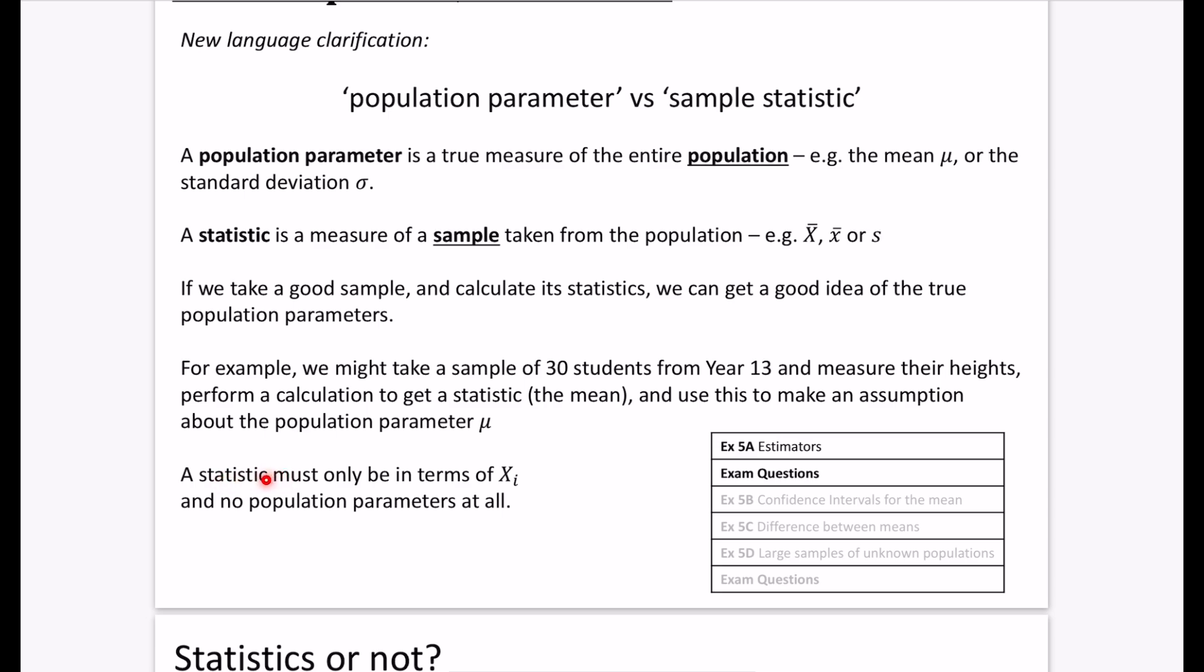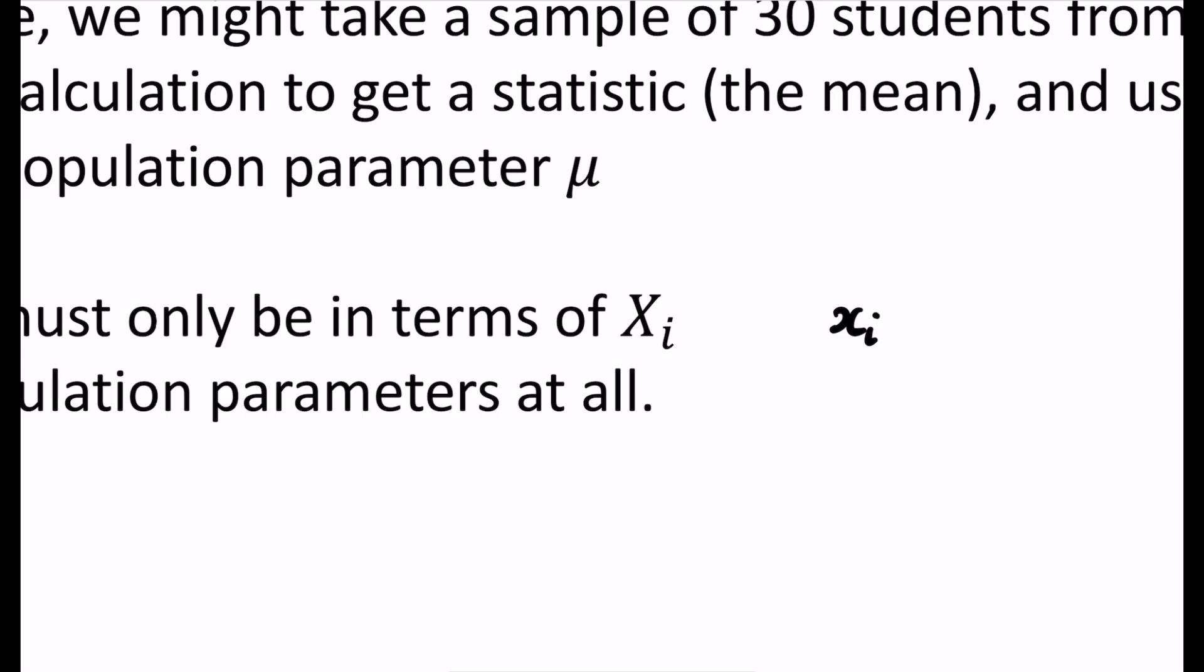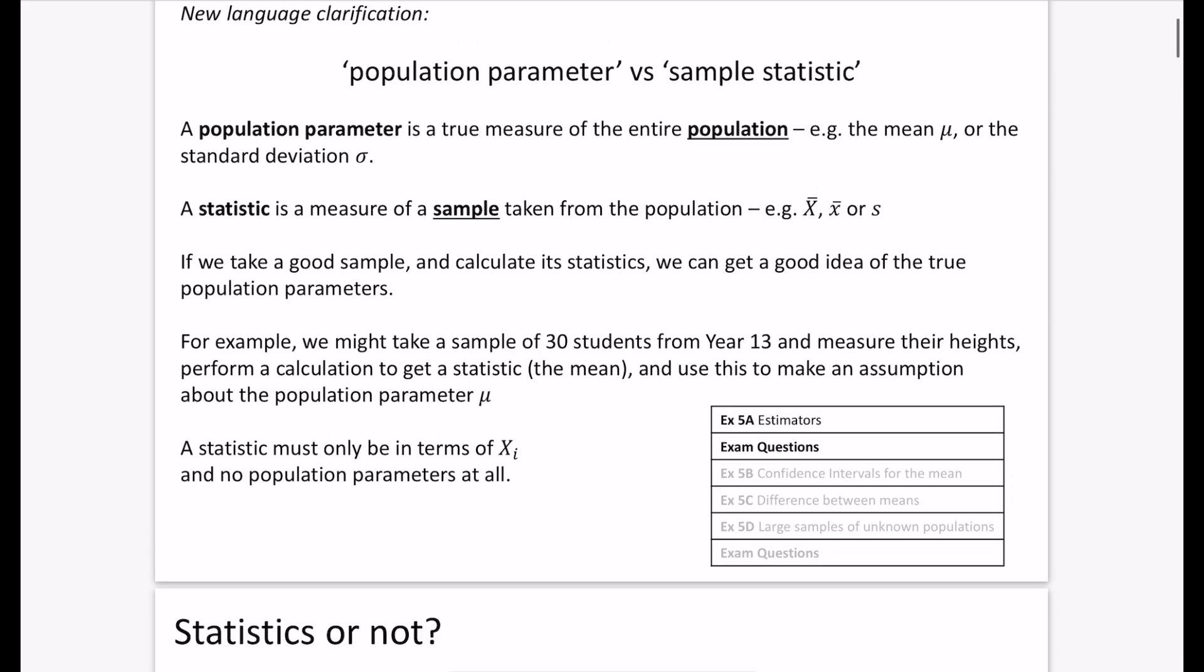A statistic must only be in terms of xi and no population parameters at all. That makes sense - a statistic can't have anything to do with population parameters because they're two different things. When we say xi, x with a little i is just some observation from the distribution. Lowercase xi would be a specific one, like the height was 180 centimeters for someone in Year 13. Capital Xi is just saying this is the height of someone, without a specific meaning.